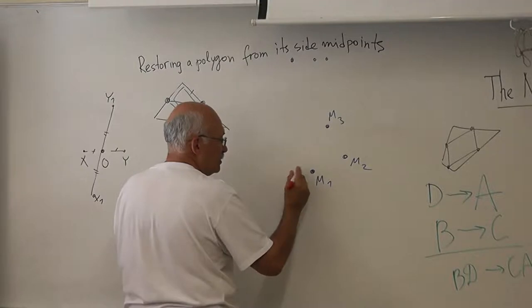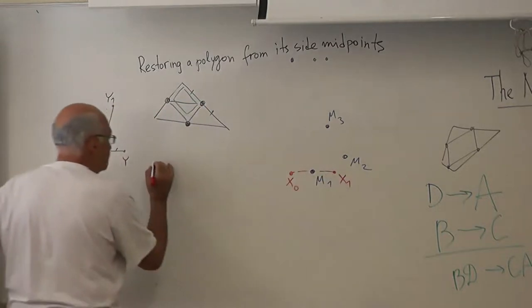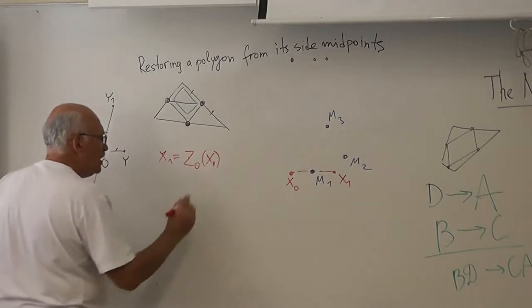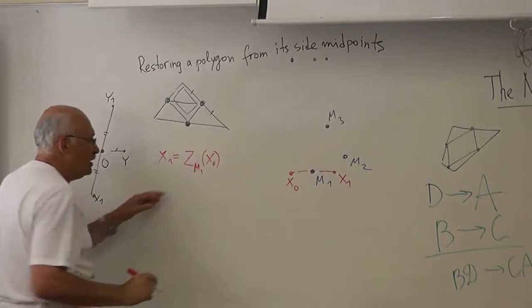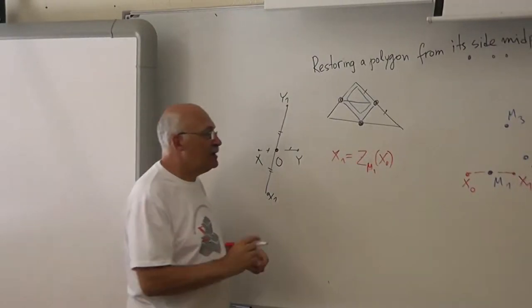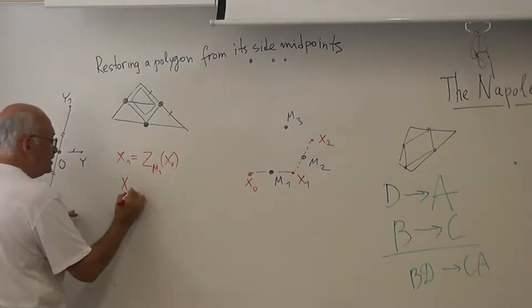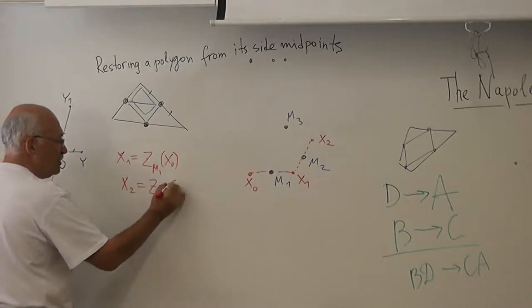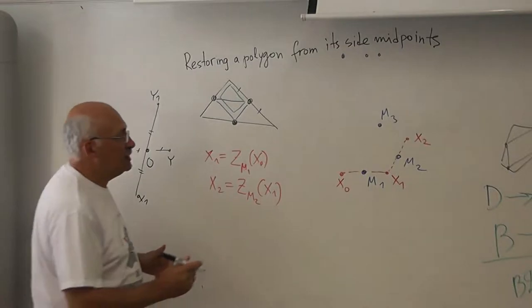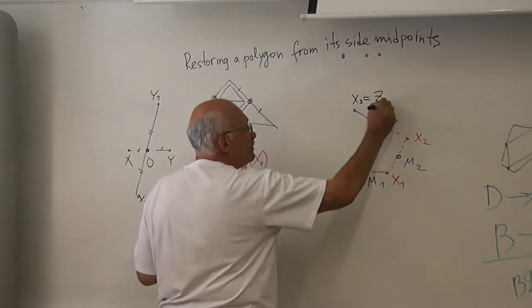Then I can start the first point, it will be X1. And X1, we can write that X1 is ZM1 of X0. This is central symmetry. So X1 is obtained from X0 by central symmetry. Then I take X1 and X2, and X2 is ZM2 of X1. And then I take X2 and X3, which is ZM3 of X2.